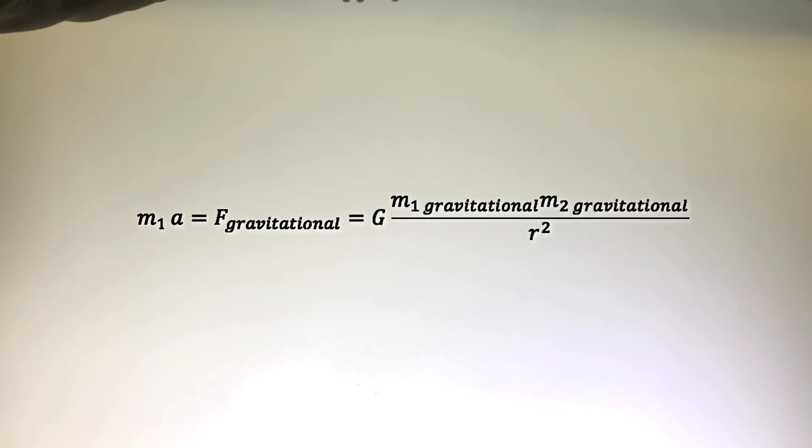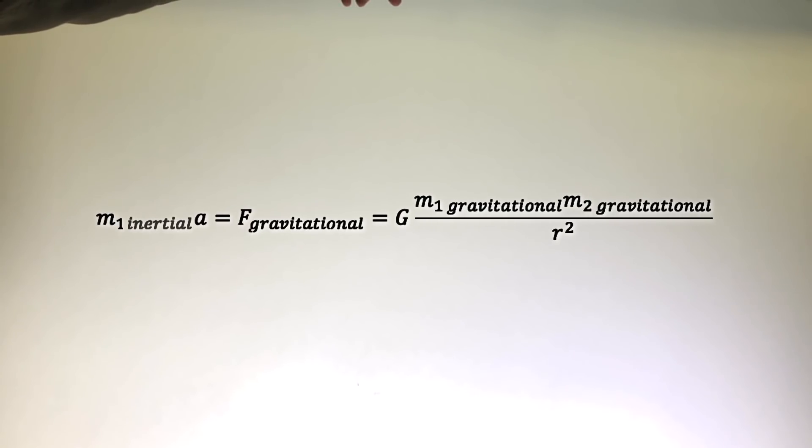Since we have a gravitational force, we can equate that to the equation of Newton's second law, F equals MA. I mean, F equals M inertial times A.